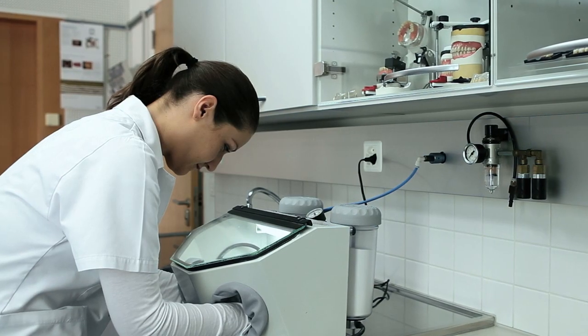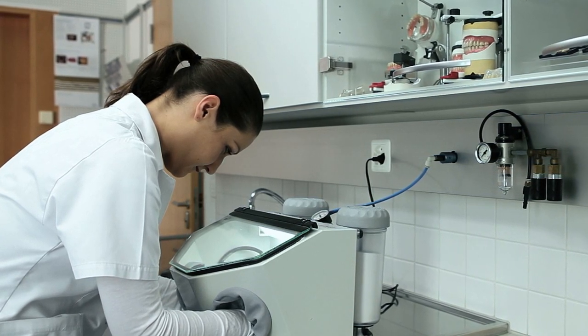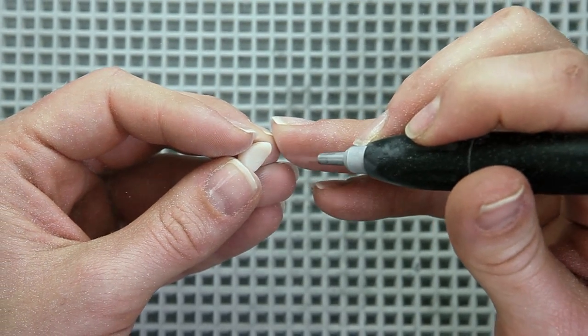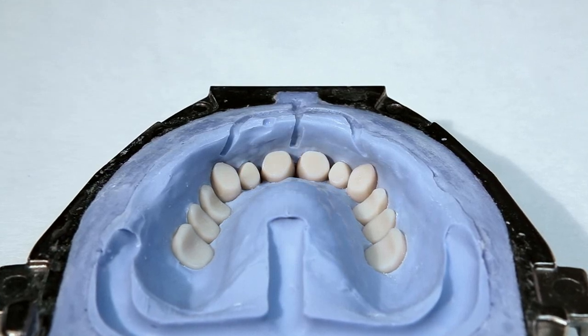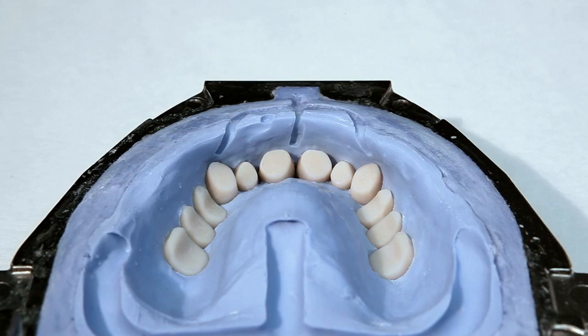After cleaning, roughen the basal surfaces by slightly sandblasting them. As an alternative, you can roughen the surfaces with a cross-cut burr. For further information on the processing of resin teeth, please refer to the instructions of the corresponding tooth manufacturer.